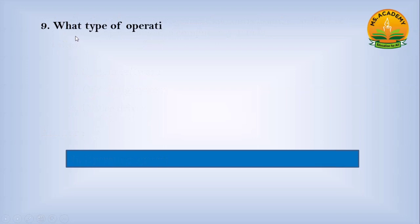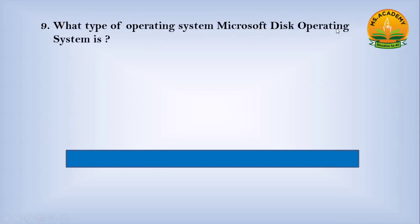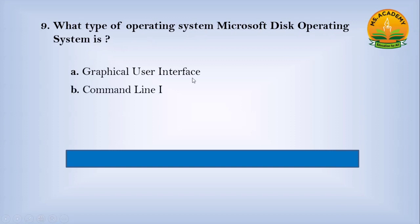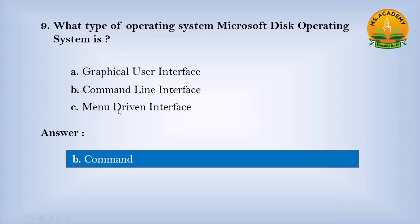What type of operating system is Microsoft Disk Operating System (MS-DOS)? Option A: graphical user interface, option B: command line interface, option C: menu-driven interface. Answer: B — command line interface.